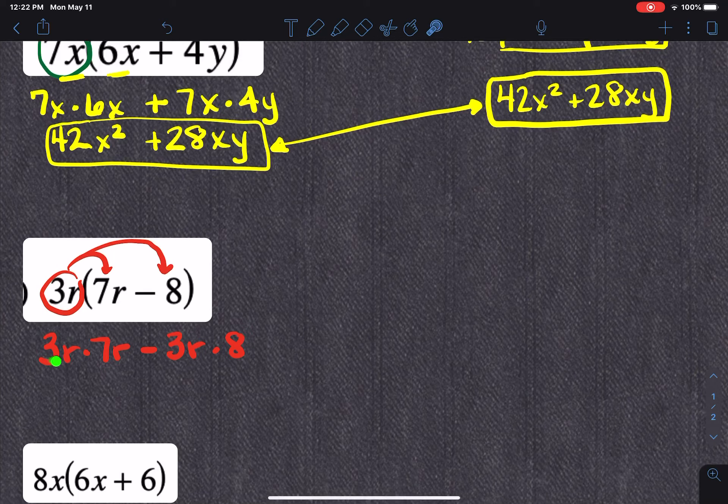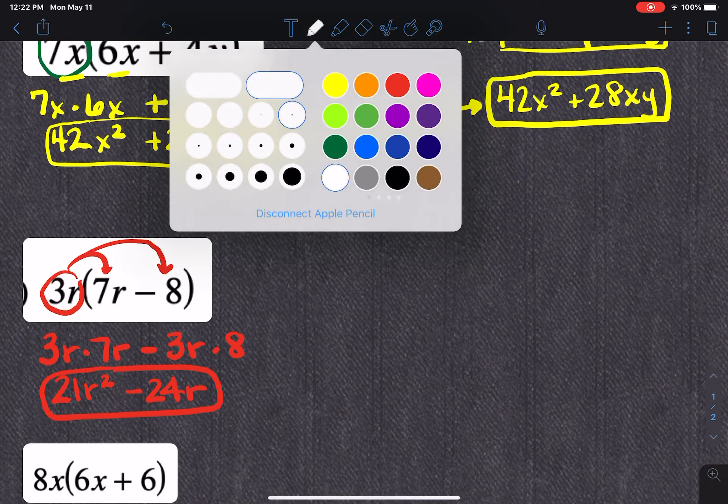So 3R and 7R would be 21R squared. Now, for those of you that don't remember, you're able to get a squared here, because what these R's, if you don't assume there's a variable there, it's 1. So there'd be a 1 and a 1, which would give you 2. So in case you've forgotten that. Now, in the next one, negative 3R times 8 is going to be negative 24R.